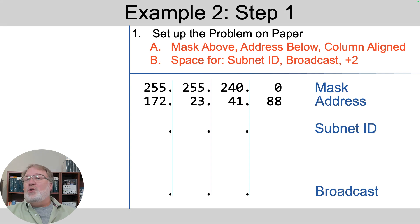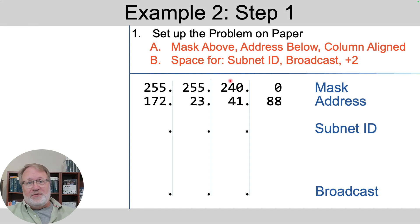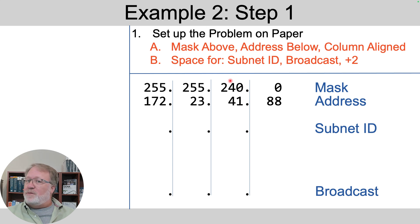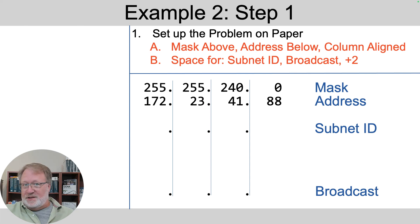Example one didn't show the interesting or difficult octet, so let's do example two. Here we have this IP address and this dotted decimal mask. Notice the third octet of the mask is 240 — that's neither a zero nor a 255, so we'll use those extra steps in step four. Steps one, two, three, and five are exactly the same as before. We set up the problem space, write the dotted decimal mask followed by the address, leave space for four numbers, and make sure we have column alignment.